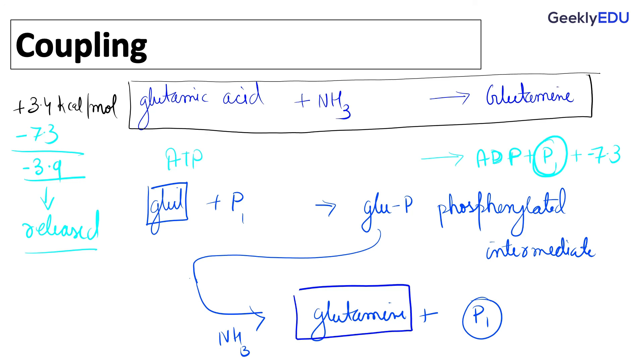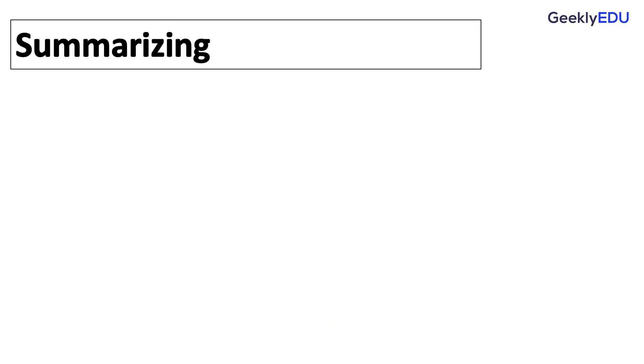This is how you use coupling to drive one reaction that requires energy and another that gives off energy. In this case, that was the breaking, or hydrolysis, of ATP. Let's summarize. Adenosine triphosphate can act as energy currency because of hydrolysis reaction. You can use hydrolysis reaction in two ways. Directly, like by causing a conformational change, or by coupling with another reaction. Thank you.